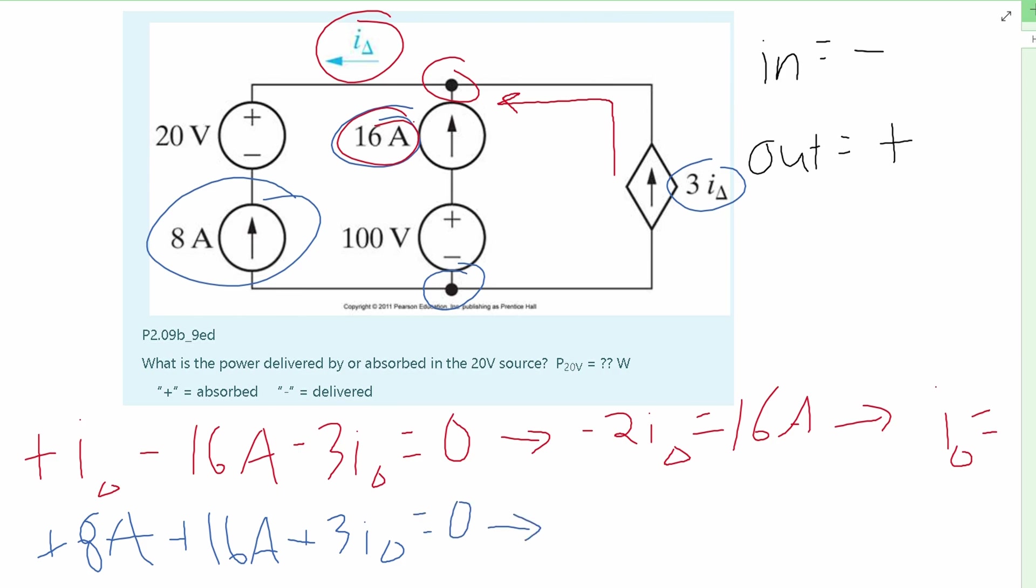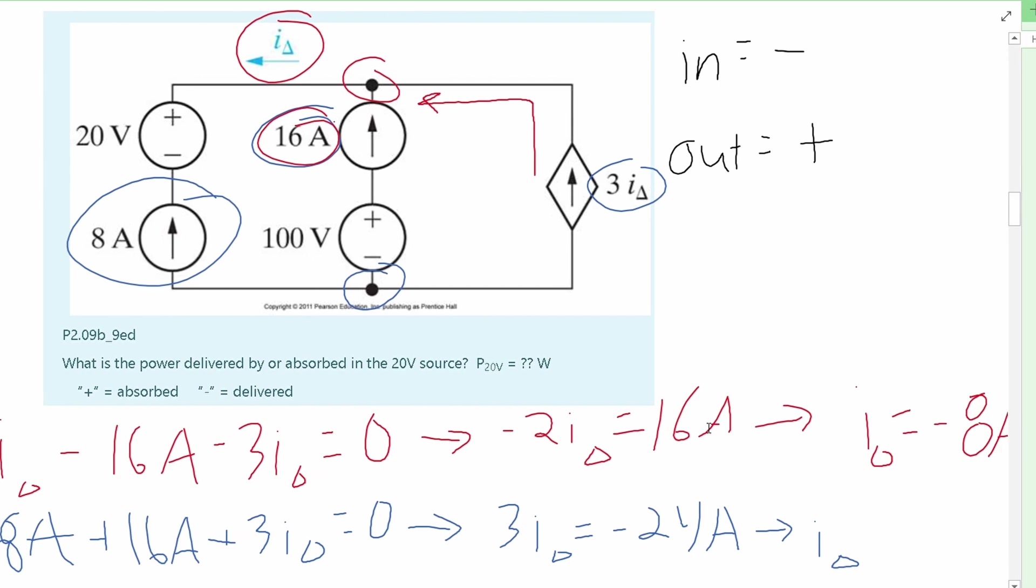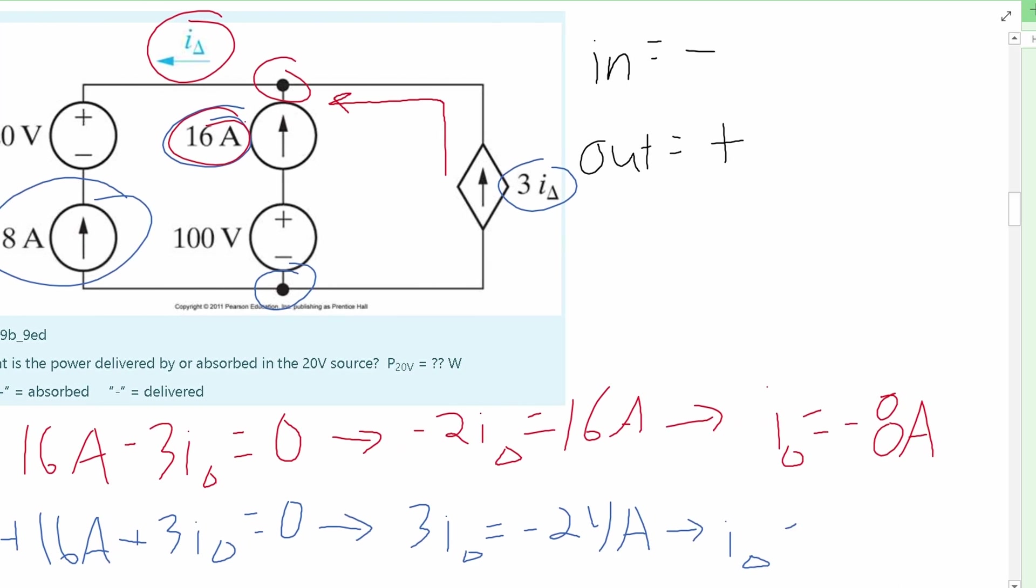Now we're going to move the amps over to the other side. So we have 3 I delta, and this is going to be equal to a negative 24 amps. Doing basic math, we can see that our I delta for this will be equal to negative 8, which is exactly the same as what we got for our top node.